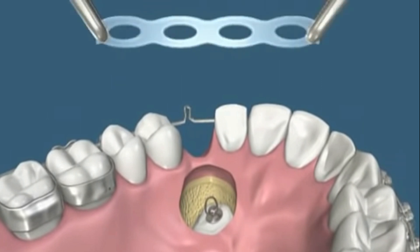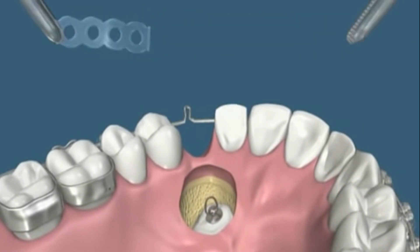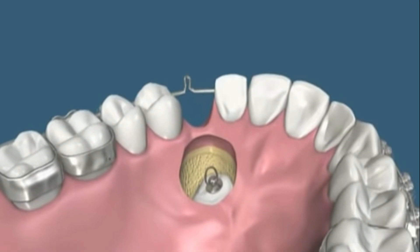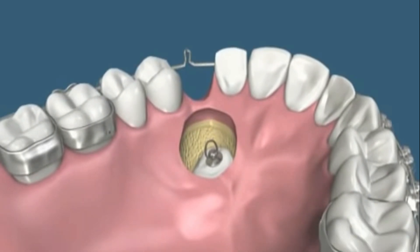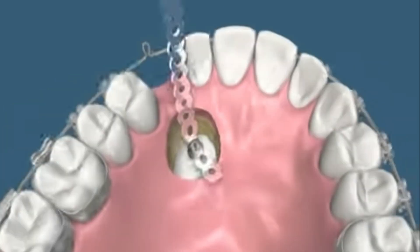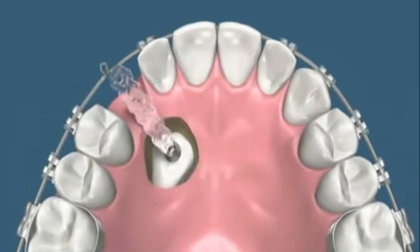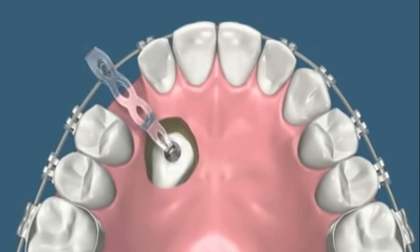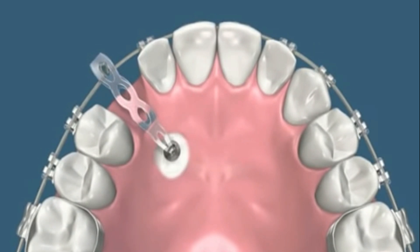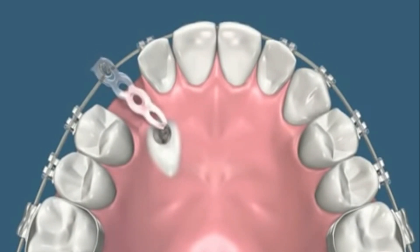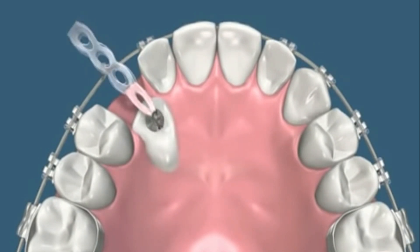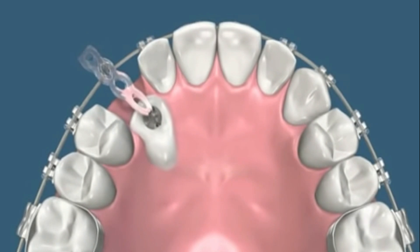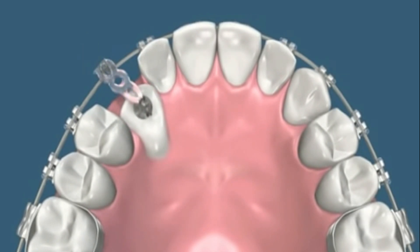An orthodontic attachment is bonded to the exposed tooth surface and the flap is sutured — this is called the closed technique. If it remains open, it is called the open technique. Orthodontic traction with an elastomeric chain is used to bring the tooth into the oral cavity, and with every appointment the e-chain is activated until the canine is out and a bracket can be bonded.